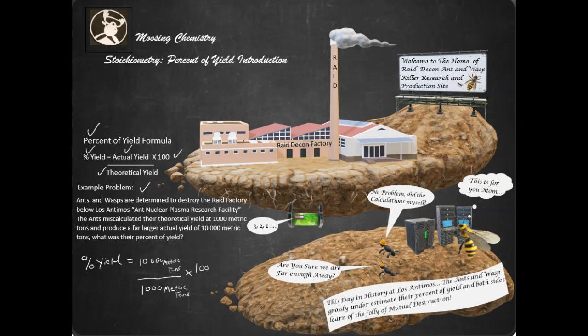So when you divide 10,000 by 1,000, you get 10 times 100, which equals 1,000 percent yield. So they had 1,000 percent yield.